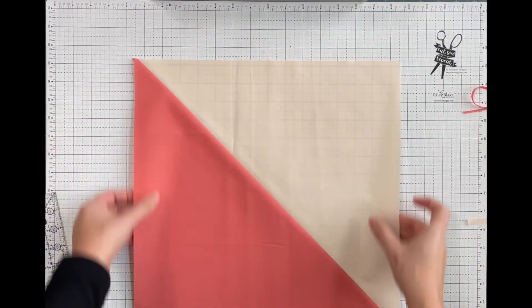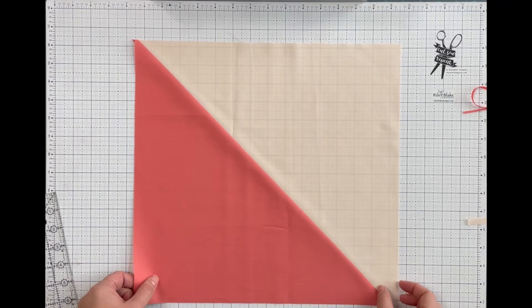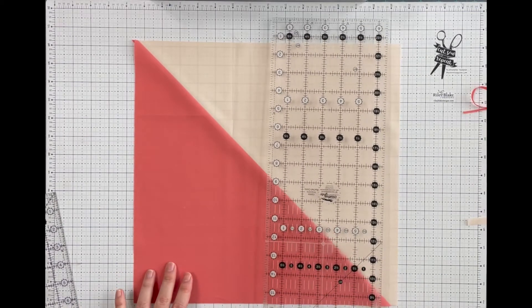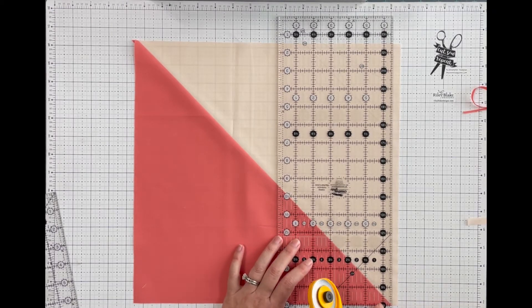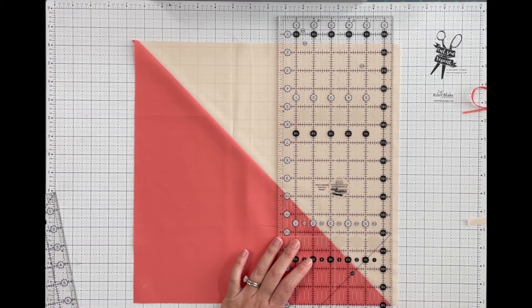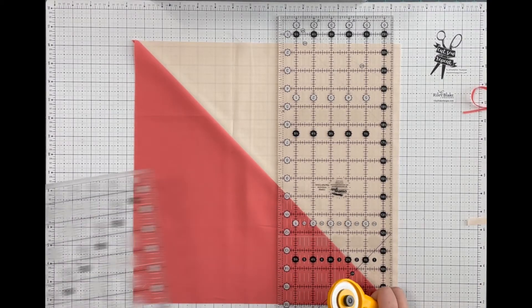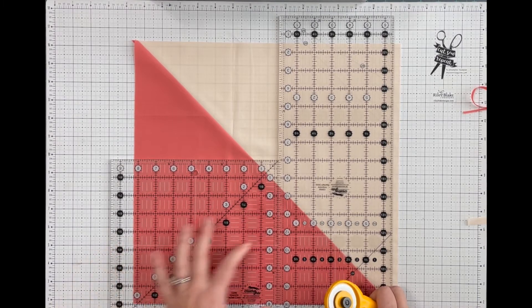Okay, so now I need to trim these two sides. And when I trim this first edge, I want to make sure that the corner right here lines up even. Perfect.